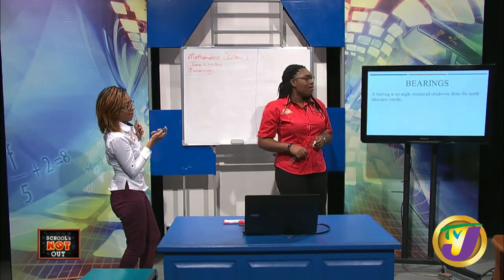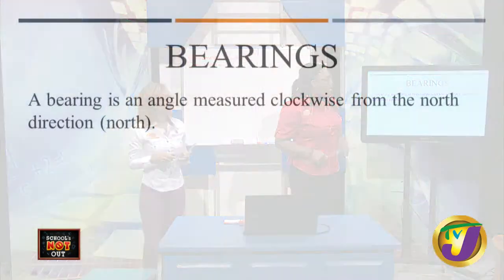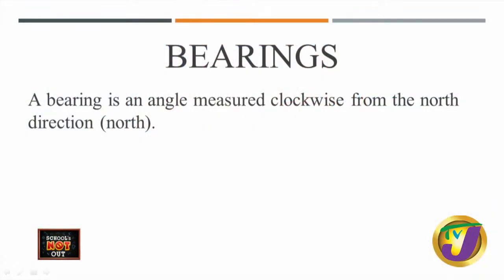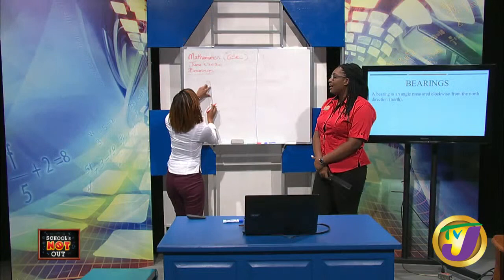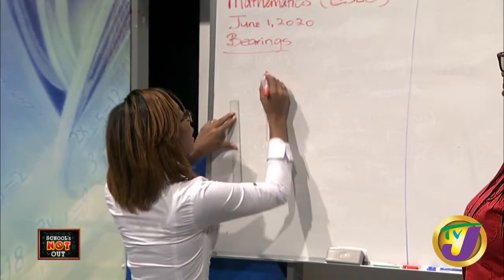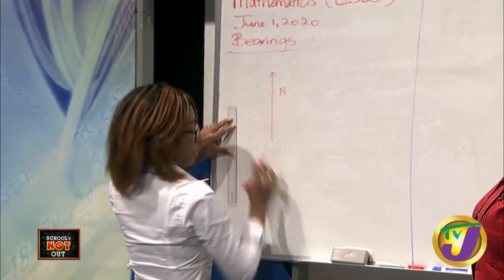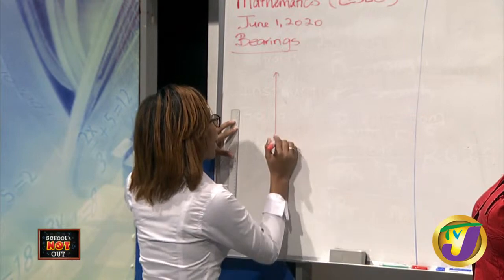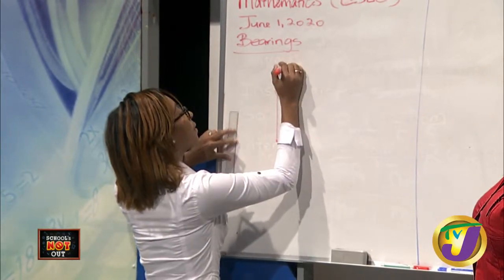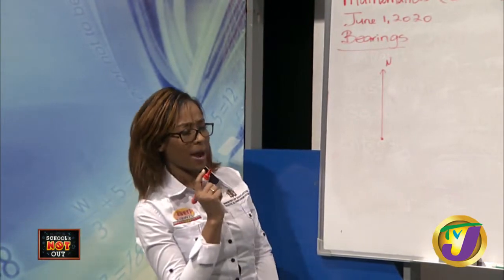So a bearing is actually an angular measure clockwise from a north or northern direction. Let me sketch this out. We have a north line — here I'm representing my north line — and we have a point of reference to start. We go in a clockwise direction.